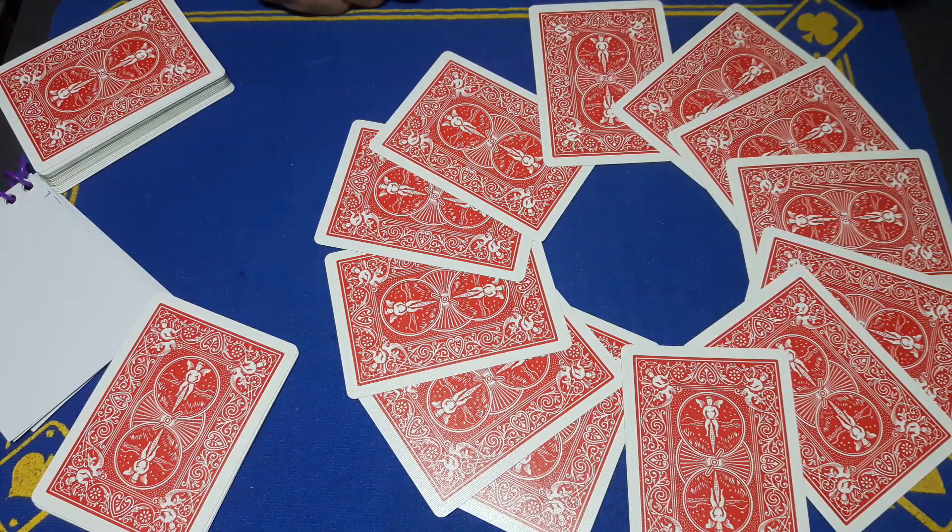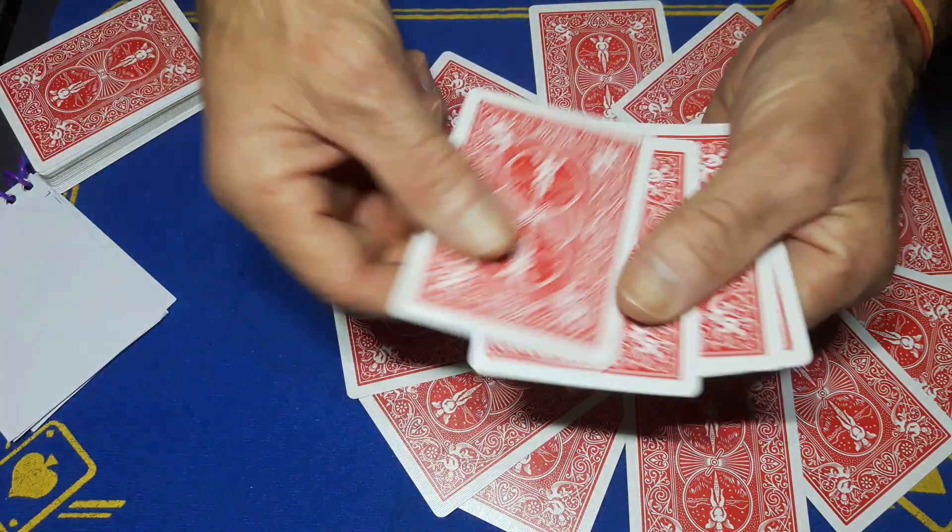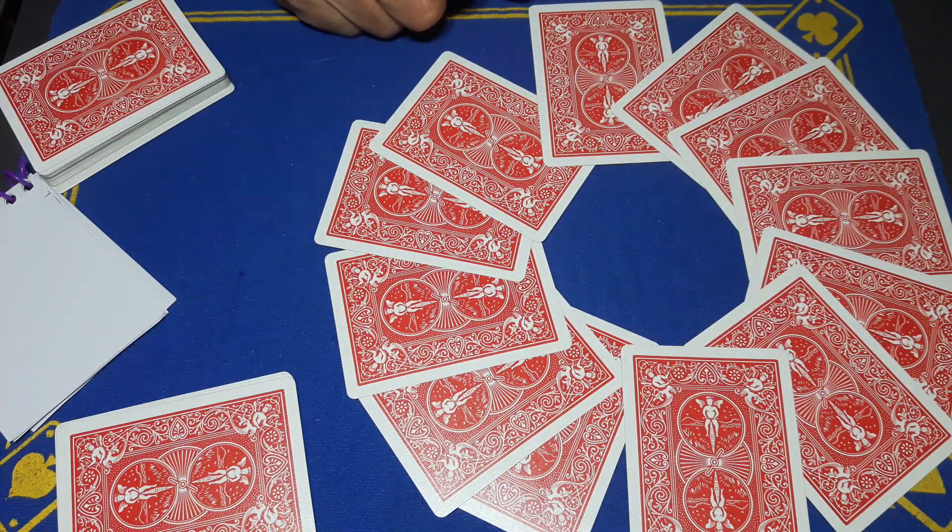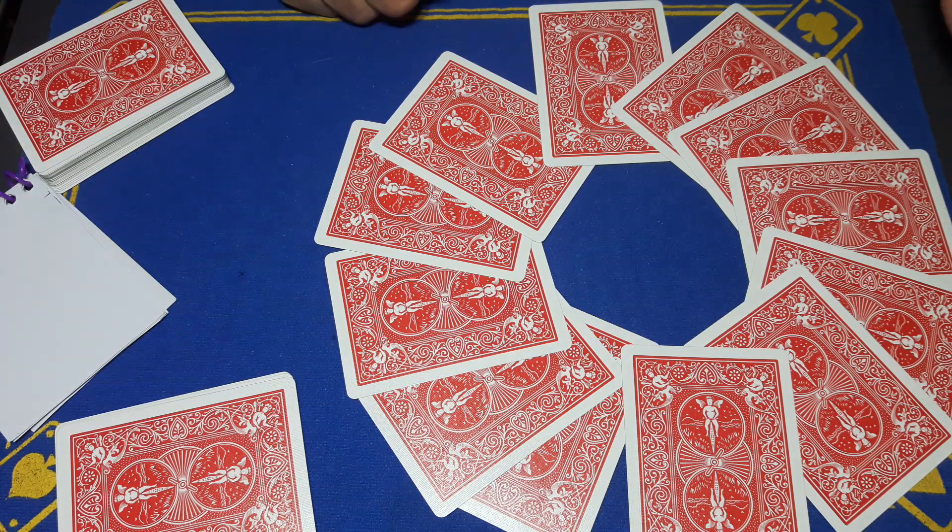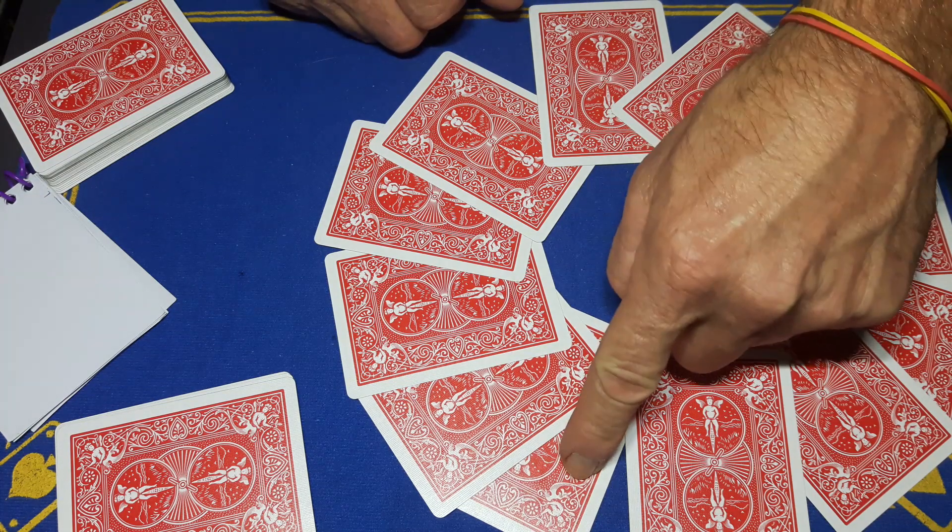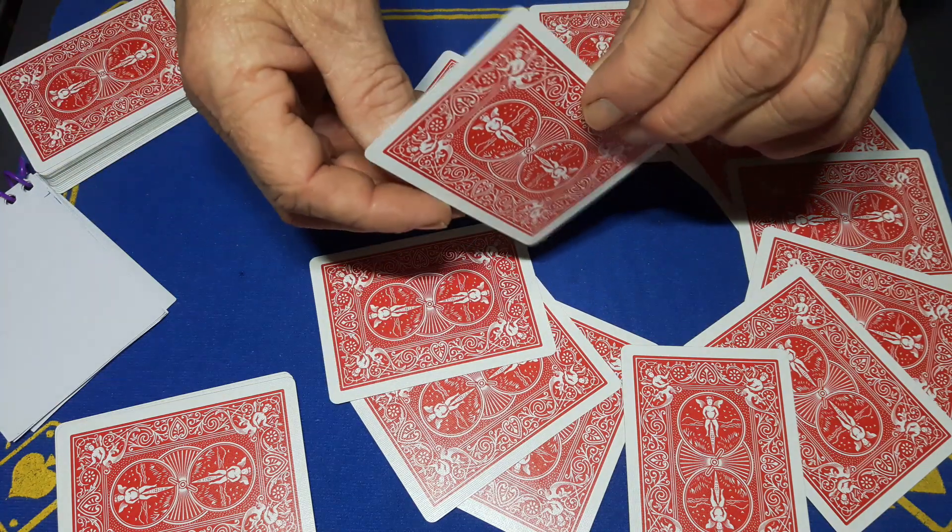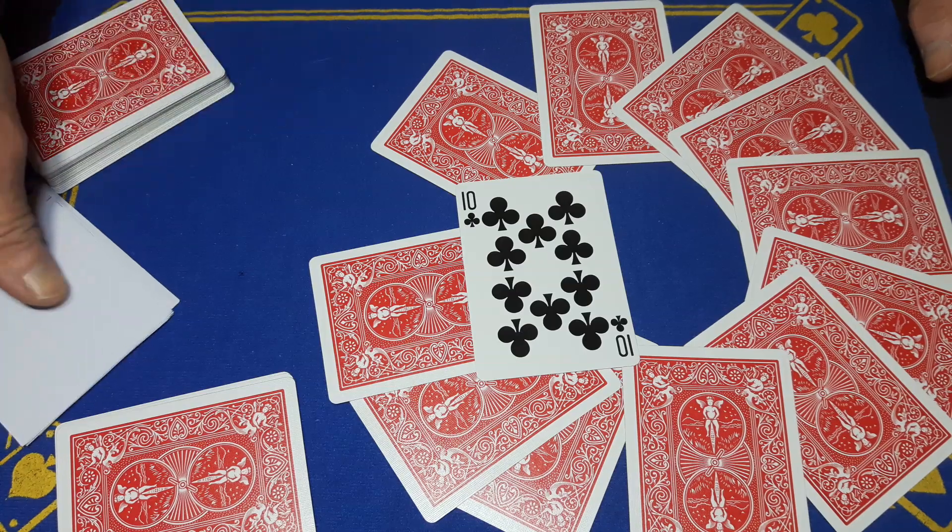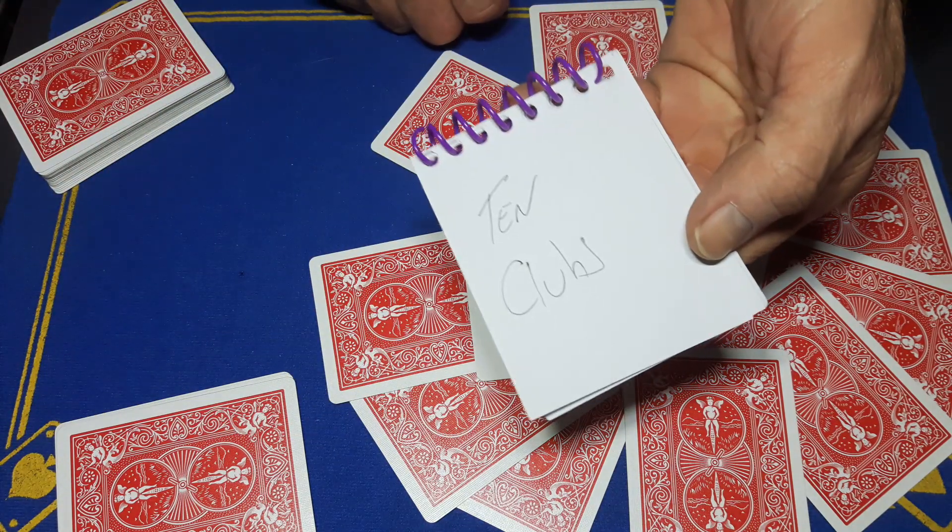You cut off a portion of cards representing an hour. The hour is 1 2 3 4 o'clock. Is it possible I can know beforehand what time of day you're gonna think of? Because if we go to 1 2 3 4 o'clock, we will find the 10 of clubs. And guess what? That's exactly what I wrote down: 10 of clubs. How cool is that?